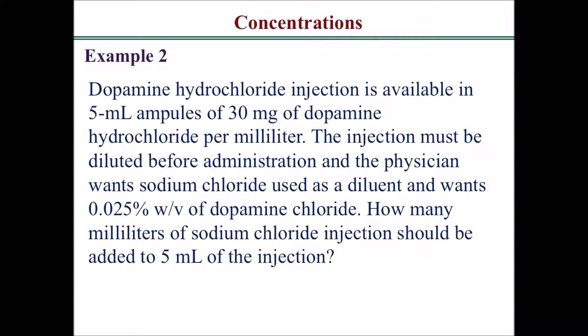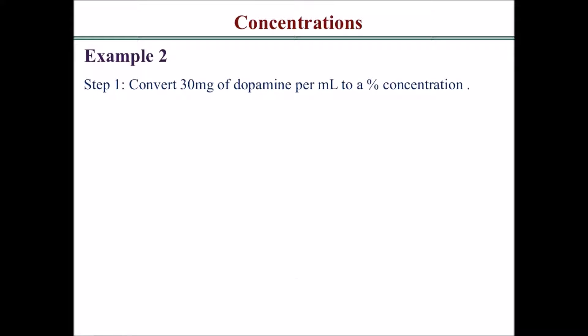For example two: dopamine hydrochloride injection is available in 5 milliliter ampoules of 30 milligrams dopamine hydrochloride per milliliter. The injection must be diluted before administration. The physician wants sodium chloride used as a diluent to make a 0.025% weight by volume dopamine hydrochloride solution. You need to find how many milliliters of sodium chloride should be added to 5 milliliters of the injection. For step one, convert 30 mg/mL to a percent concentration: 30 mg over 1 mL equals 150 mg over 5 mL, times 100% equals 3%.